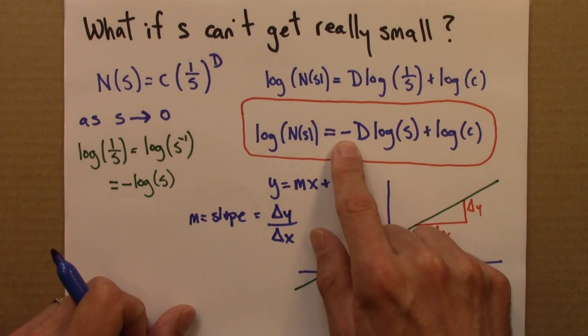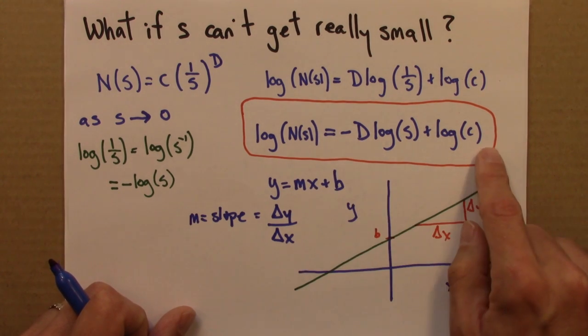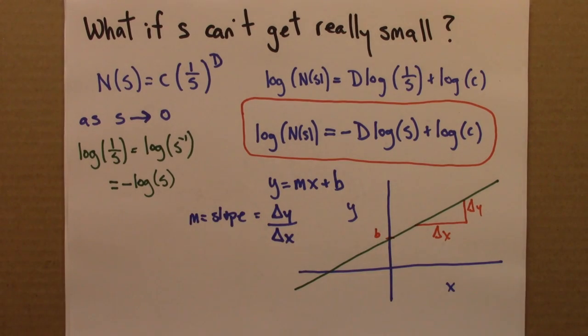We can then figure out the slope of the line, and the slope of the line will be minus D. If we wanted to, we could figure out the intercept, and that would be log c, if we needed to know that as well.